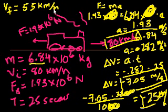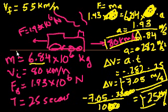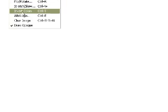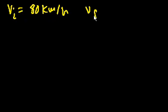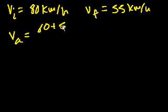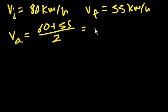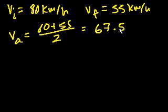The second part of the question asks how far the train has traveled during this time — how far does it go while braking from 80 to 55 kilometers per hour? We need the average velocity multiplied by the time. The initial velocity was 80 kilometers per hour and the final velocity is 55 kilometers per hour, so the average velocity is 80 plus 55 divided by 2, which is 67.5 kilometers per hour.